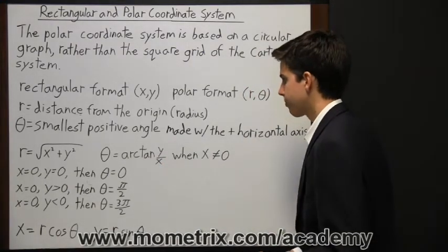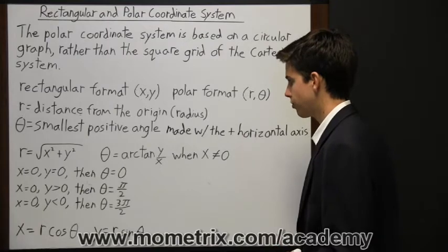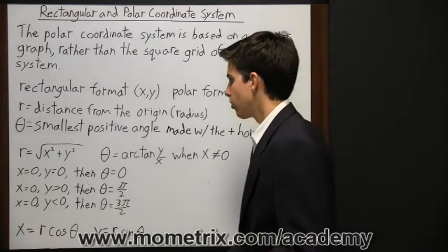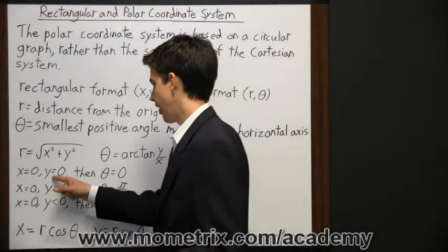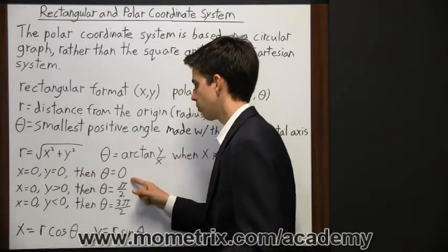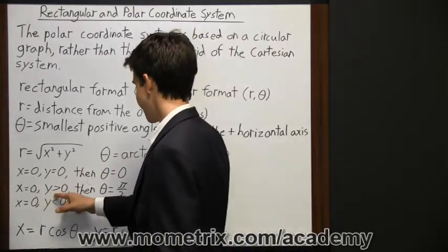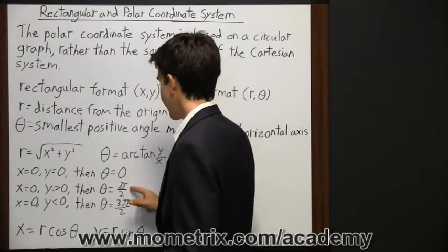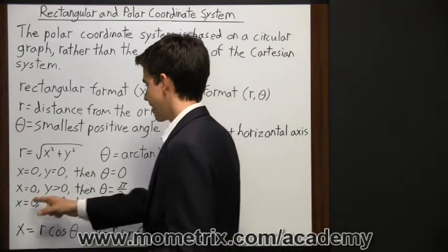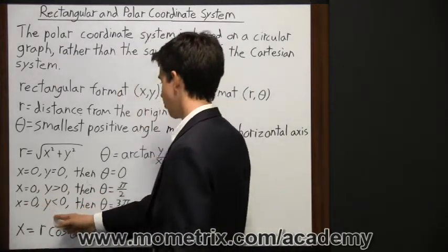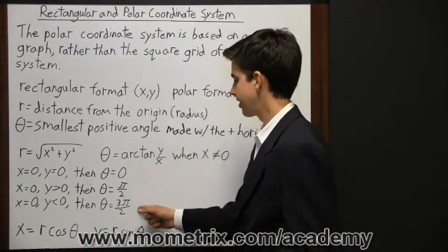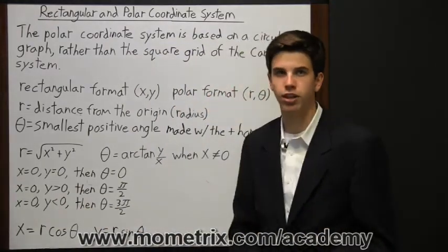Occasionally x is going to equal 0, so we have some special rules for that scenario. When x equals 0 and y equals 0, then theta equals 0. When x equals 0 and y is greater than 0, then theta equals pi divided by 2. And finally, when x equals 0 and y is less than 0, then theta equals 3 pi divided by 2.